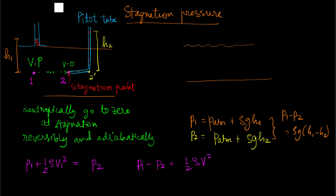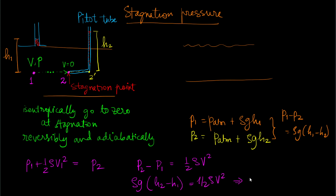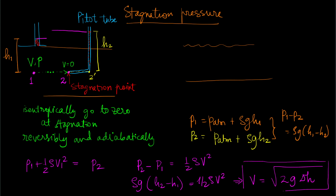There was a small sign oversight: half rho v squared equals p2 minus p1, not the other way around. So p2 minus p1 equals rho g times (h2 minus h1) equals half rho v squared. This gives us the velocity as v equals the square root of 2g times delta h — the velocity in the flow in terms of the height difference between the static tap and the Pitot tube.